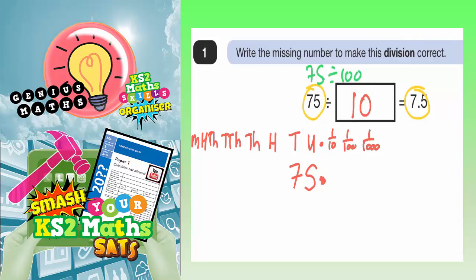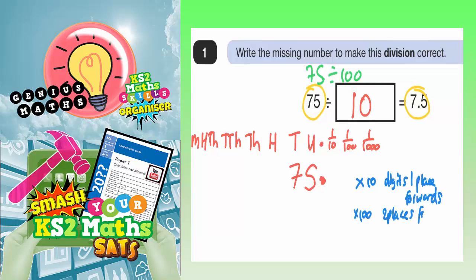What about if you're multiplying? Well, if you're dividing, you move the digits backwards. If you're multiplying, you move the digits the opposite way — so forwards. For example, if you're multiplying by 10, you move the digits one place forwards. If you're multiplying by 100, it's two places forwards. And if you're multiplying by 1,000, well, 1,000 has got three zeros on it, so that's three places forwards.